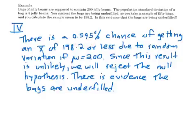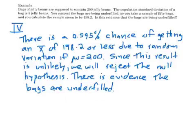The probability of it happening by random chance is about half of one percent — that's really, really unlikely. Since this result is really unlikely, we reject the null hypothesis, and there is evidence that the bags are under-filled. Either it happened by random chance, or the bags were being under-filled. We calculated the probability of it happening by random chance, and that number is so low that we're saying there's evidence that our assumption that mu is 200 is actually incorrect.